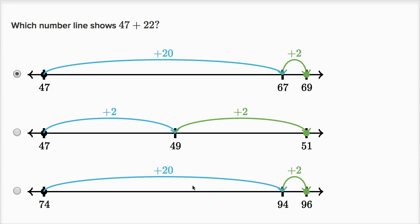And this choice right over here, we are adding 20 and then we're adding two, but we're not starting at 47, we're starting at 74. So this is 74 plus 22. So I definitely feel good about that choice right over there.